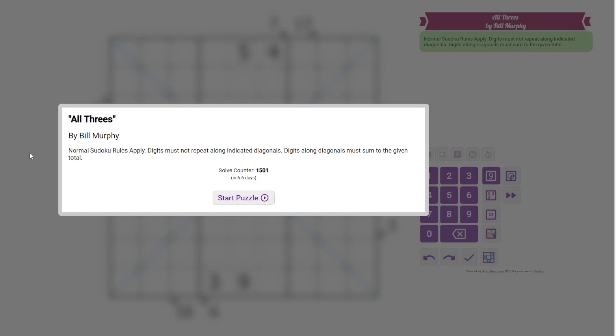Hi everyone, this is the Gas Walkthrough for September 23rd. I'm Philip Newman. Today I'm solving All Threes by Bill Murphy. This is a diagonal and little killer Sudoku.